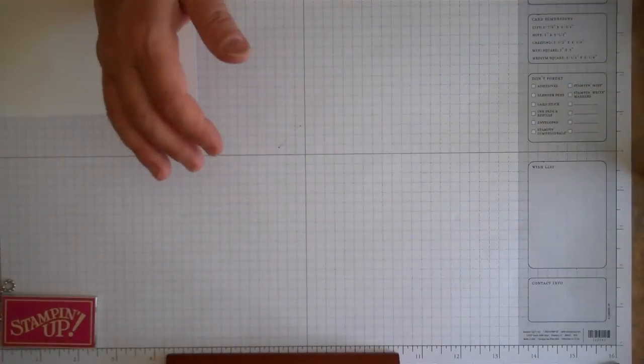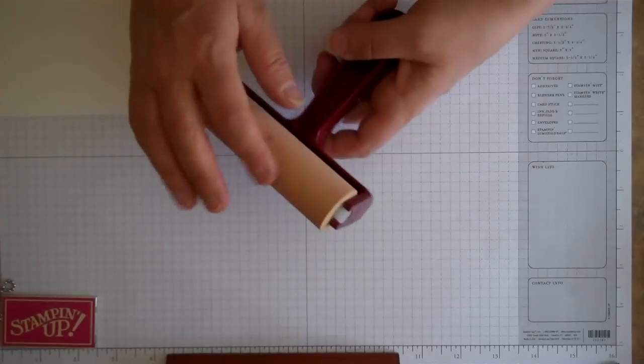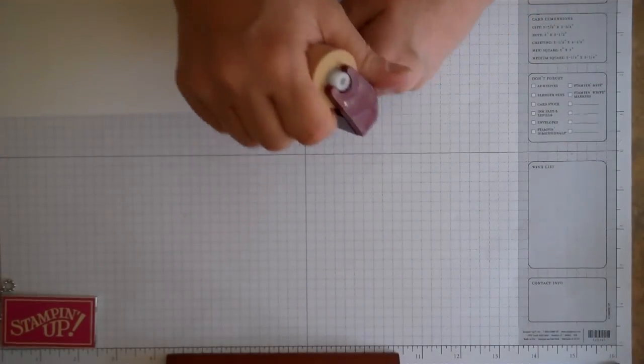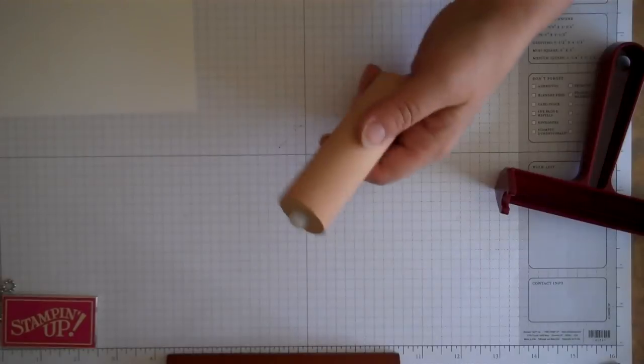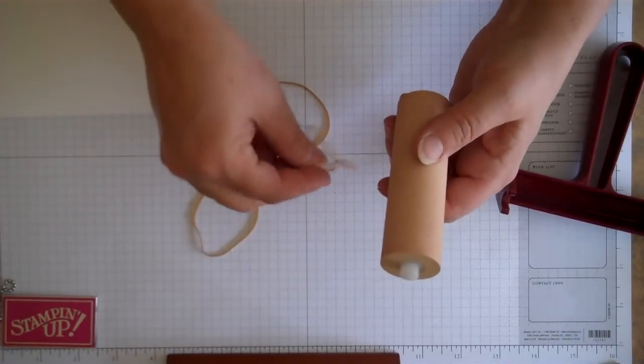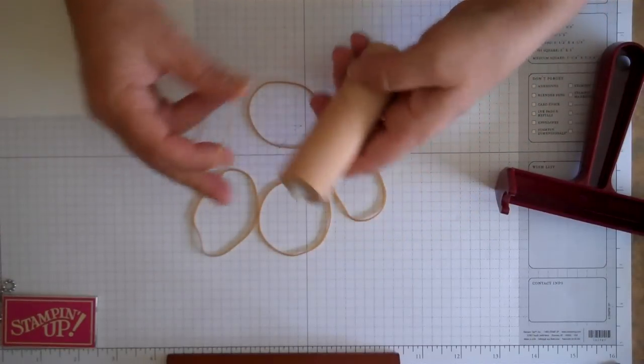What you're going to need is a brayer with the roller and the handle. These rollers come out, so you're just going to go ahead and pull that roller out. It's a rubber type roller. Then you're going to take rubber bands, and you can use various sizes. I have all one size here just to show you. Five or six rubber bands will probably do the trick.